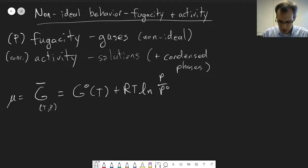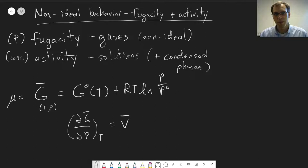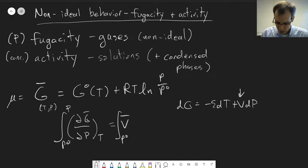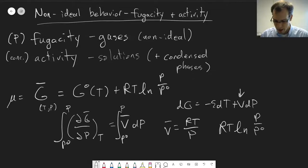And just as a reminder where this came from, we integrated this partial derivative, dg bar dp at constant T is equal to v bar. And this just comes from the fact that dG equals minus S dT plus V dP. And this partial derivative is equal to the volume. So if we integrate this from p naught to p on both sides, and we make a substitution, we substitute v bar equals RT over p. Then we get this expression that if we integrate what's on the right, we get RT log p over p naught. And that's where this expression up here comes from.